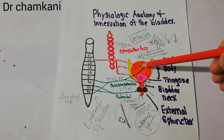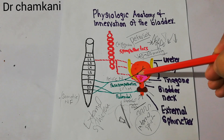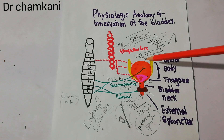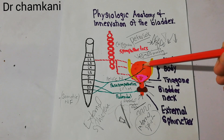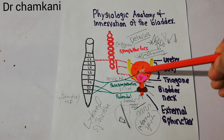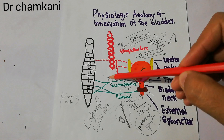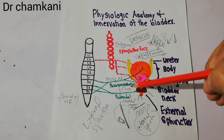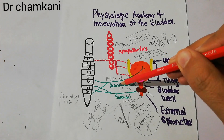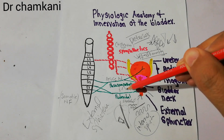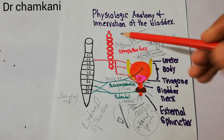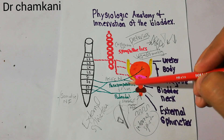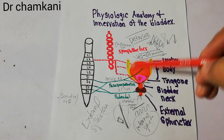The sensory fibers detect whether urine is present in the bladder or not, and any sensation in the bladder — sensations are taken through the sensory fibers. The motor fibers present in the pelvic nerve are parasympathetic fibers. There are both sensory and motor fibers in the pelvic nerve, but the motor fibers are parasympathetic and the sensory fibers are not parasympathetic.